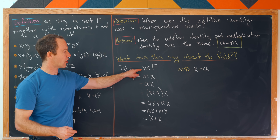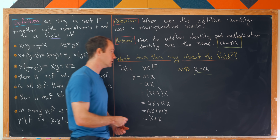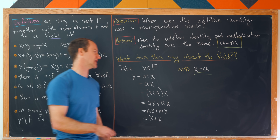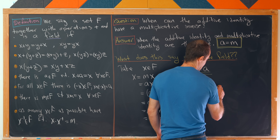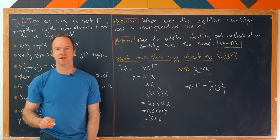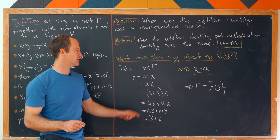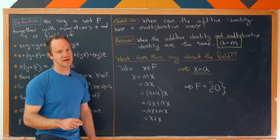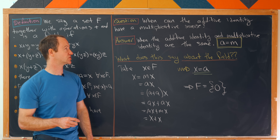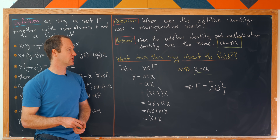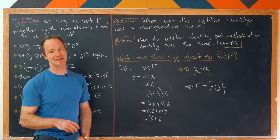So we took an arbitrary element of our field and showed that element equals the additive identity, which is in turn the multiplicative identity. That means our field contains exactly one element. I'll call that element zero — the normal additive identity, and in this case also the multiplicative identity. So when can the additive identity have a multiplicative inverse? Only in the case when the field is the trivial field — the field containing a single element.